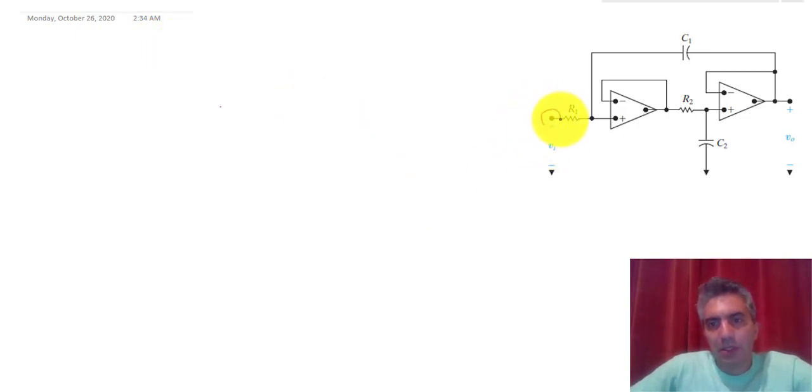So we're going to start by labeling the circuit. This will be VI. This node would be, let's call that V1, and this node right here, therefore knowing that this is basically negative feedback in the circuit, these two are going to be the same, so this would be V1.